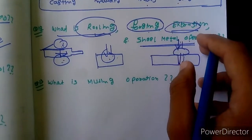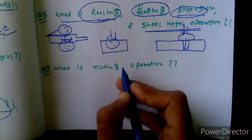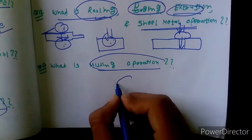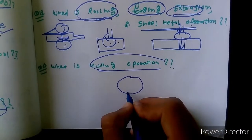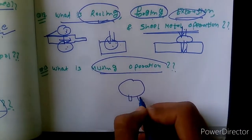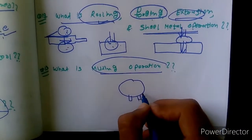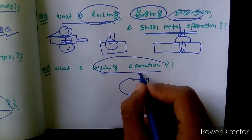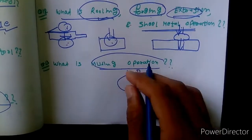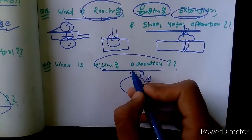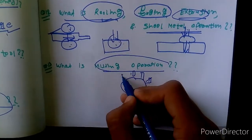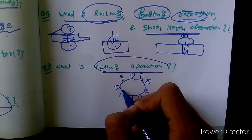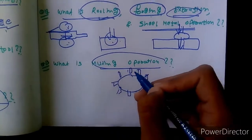That is the sheet metal operation. And what is a milling operation? In milling operation, a milling cutter is used, which is a multiple-point cutting tool.